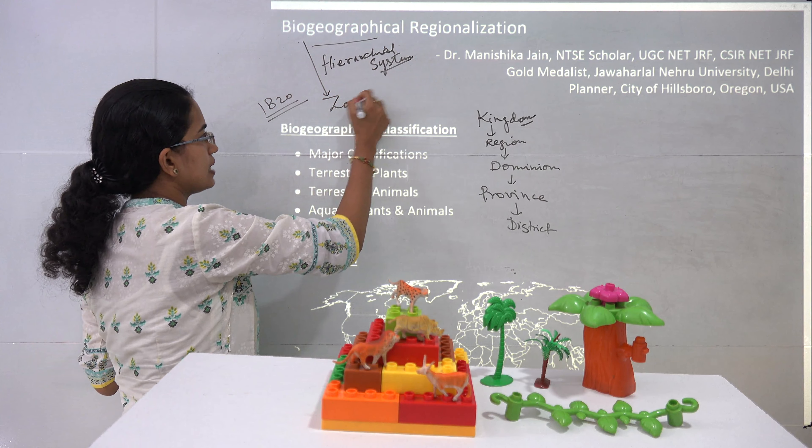Within these main kingdoms you have certain transition regions. The first transition region is the Mexican region, which lies between nearctic and neotropical. Then you have the Chinese region, which exists between paleoarctic and oriental. You have the Sahara and Arabian region, which lies between Ethiopian and oriental. You have the Indomalaya region, which lies between oriental and Australian, and finally the South American region, which lies between neotropical and the Andes. So these are the five major transition regions.